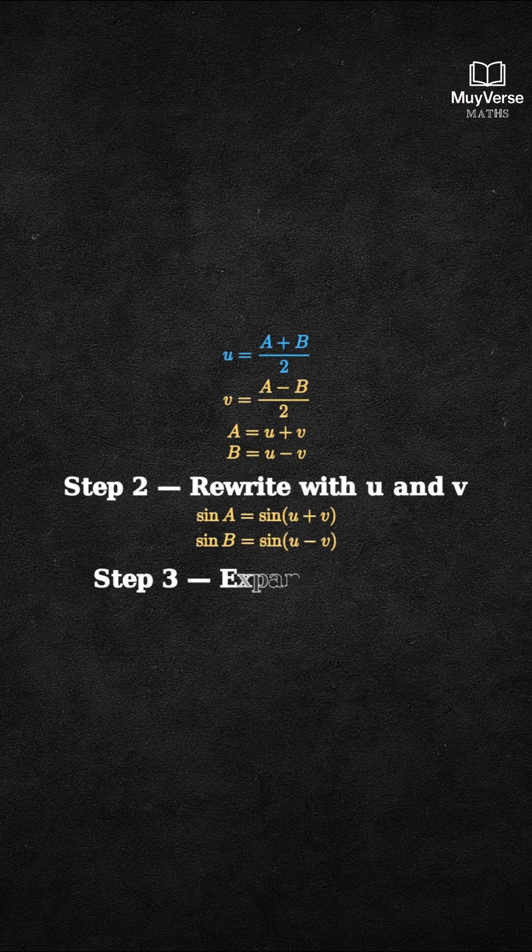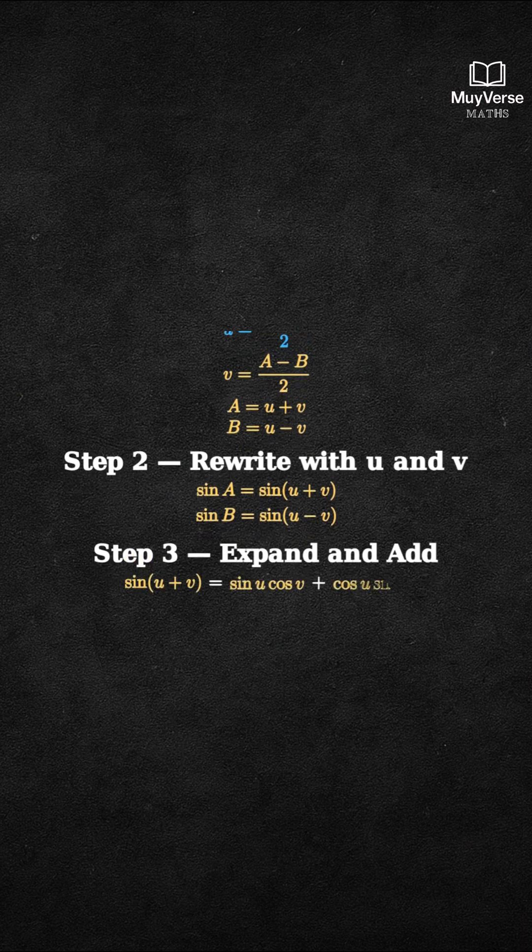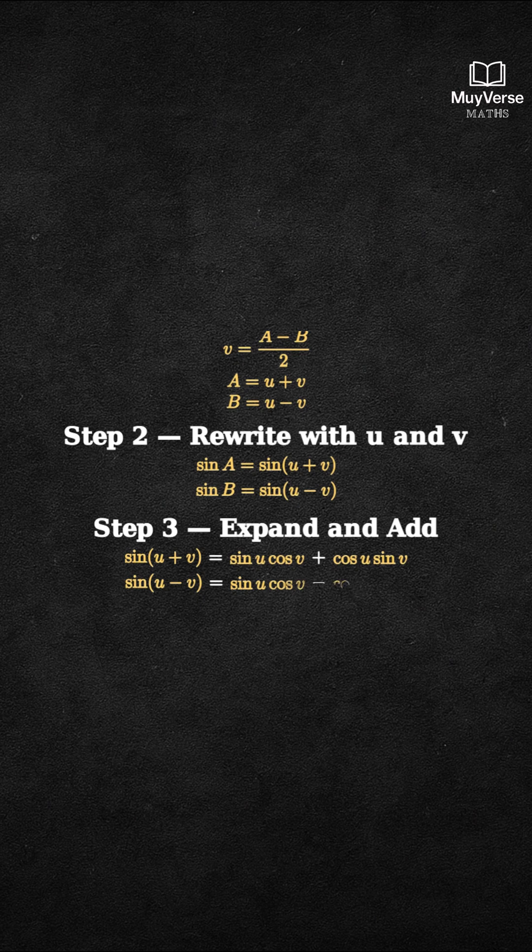Step 3. Expand with the sine addition and subtraction formulas. Sine of U plus V equals sine U cosine V plus cosine U sine V. Sine of U minus V equals sine U cosine V minus cosine U sine V.